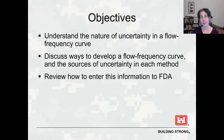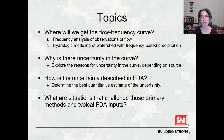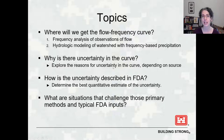Now, moving into the objectives of the presentation: understand the nature of uncertainty in a flow frequency curve, which we just examined through the main cause — sampling error, our sample perhaps not being representative of the population. We'll discuss ways to develop a flow frequency curve and the sources of uncertainty in each method, including flow frequency analysis and other methods. And then we'll review how to enter this information into FDA.